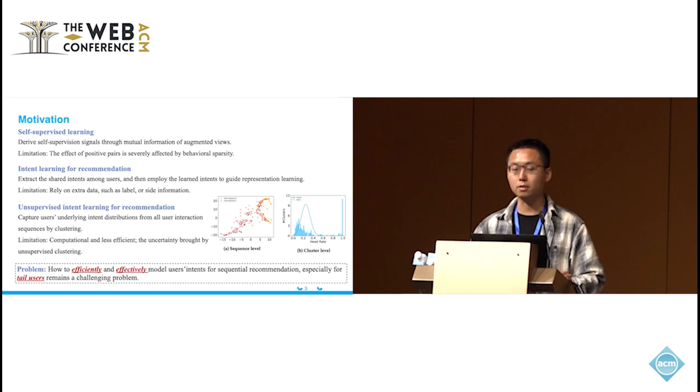Then they import the learned intents to guide representation learning for those tail sequences. Early works rely on side information or expert labels. They also are limited and biased by prior knowledge. To learn general intents based on user interaction data only, recent work uses the user's underlying intent distribution through clustering. However, clustering algorithms usually involve operations over the entire dataset. Then it's time-consuming and less efficient in dealing with large-scale datasets.